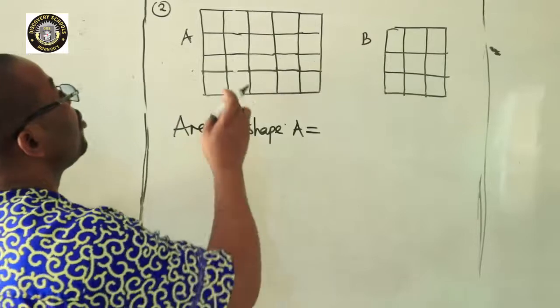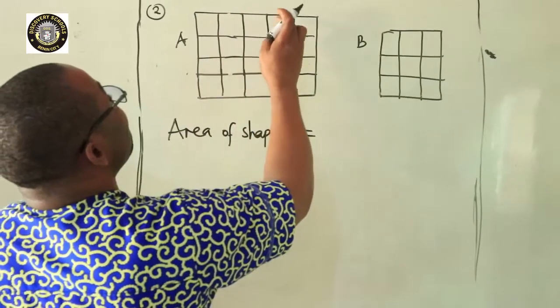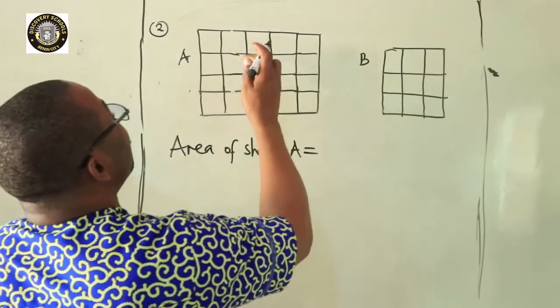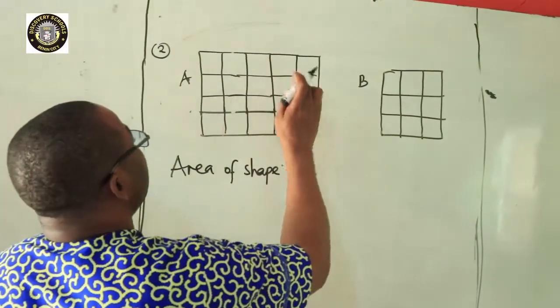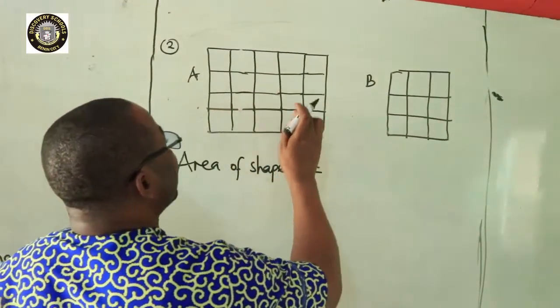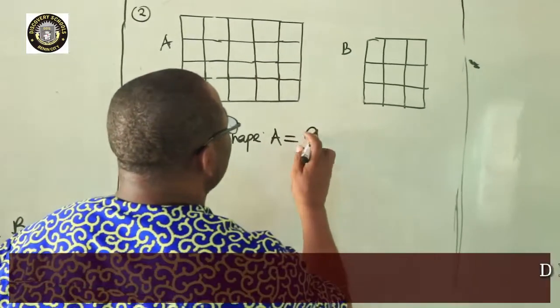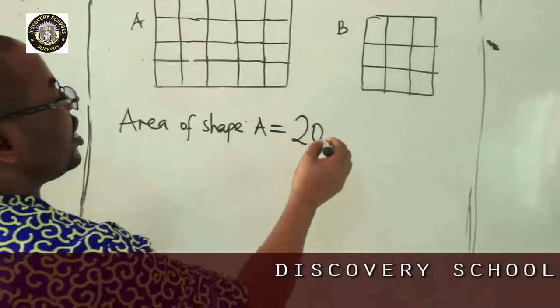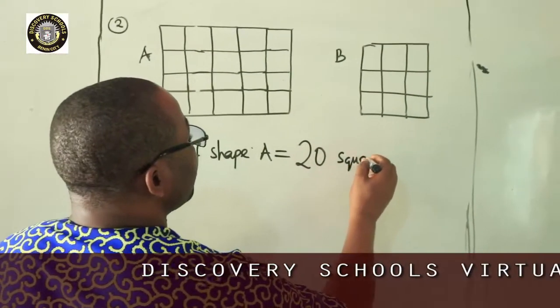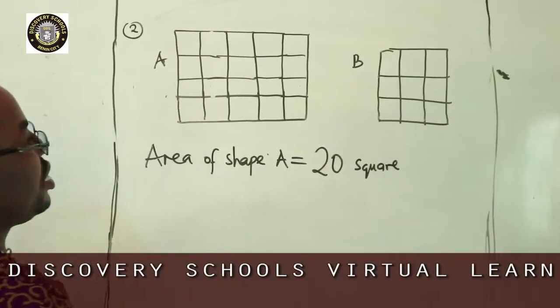Is equal to 1, 2, 3, 4, 5, 6, 7, 8, 9, 10, 11, 12, 13, 14, 15, 16, 17, 18, 19, 20. So the area of shape A is 20 square. It's 20 what? Square. Area of shape A is 20 square.